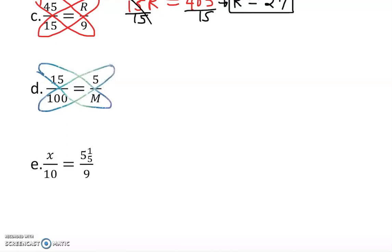It's going to give me 15M equal to 500. Then we are going to divide by 15. That is gone.